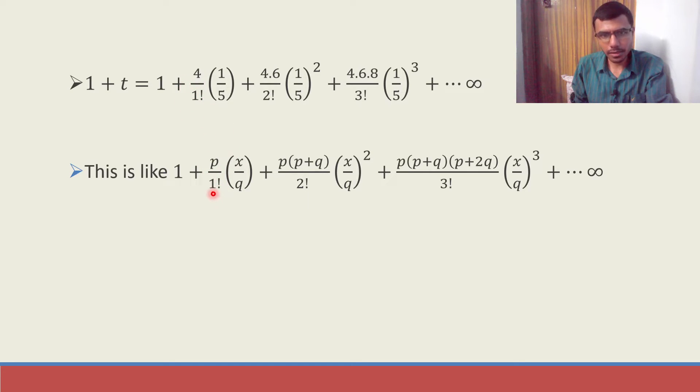If you compare see 1 factorial is there, 1 factorial is there. Here p is there, here 4 is there. So p is 4. Next, here I have x/q, here I have 1/5. So x/q is 1/5. Next, p is 4 I already got. p + q would be nothing but 6. p + q is 6.